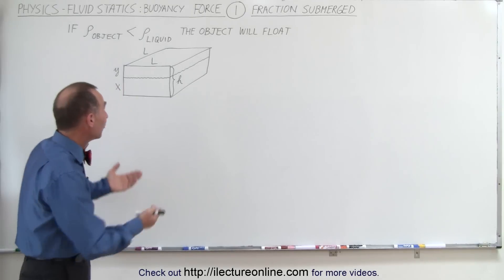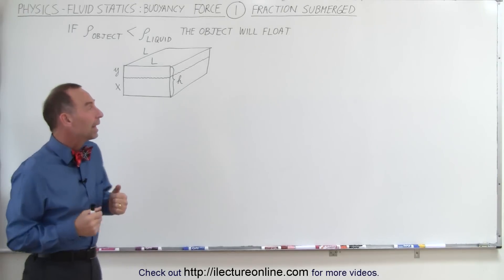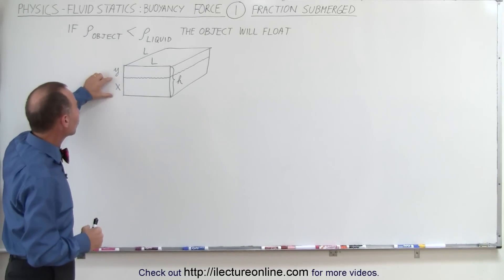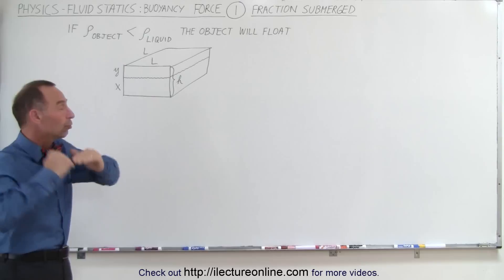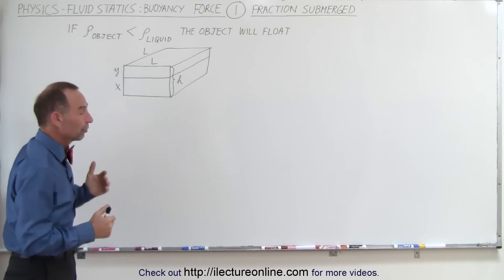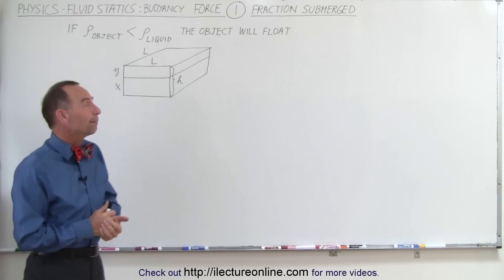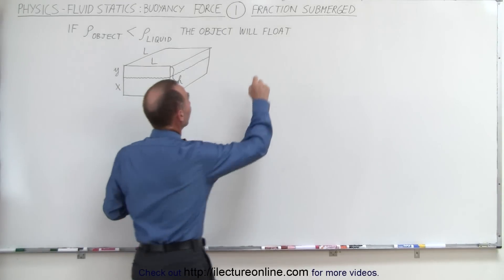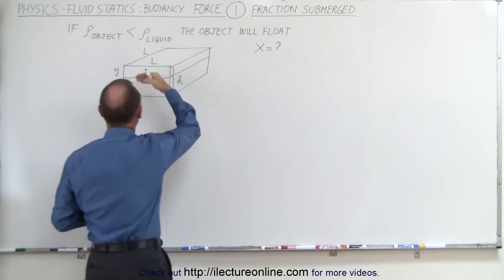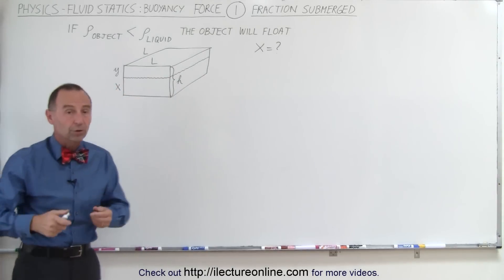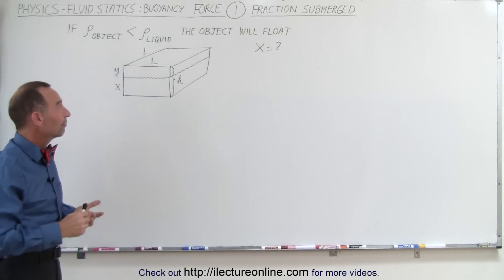For example, if we have an object that is actually floating — doesn't sink to the bottom — and we want to figure out what percentage or what fraction of the object will be below the surface and what fraction will be above the surface, we have some special techniques to figure out how to do that. In this case, we're looking for what x is equal to, x being the fraction of the object being submerged below the surface.